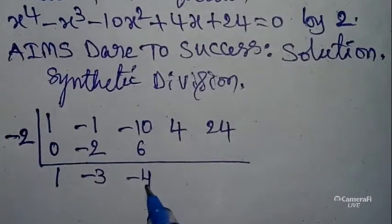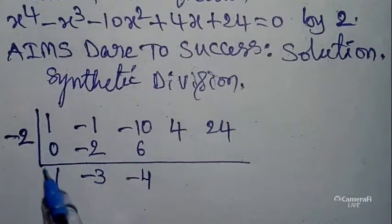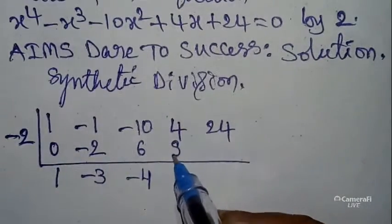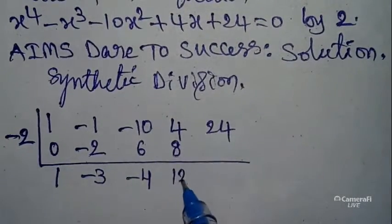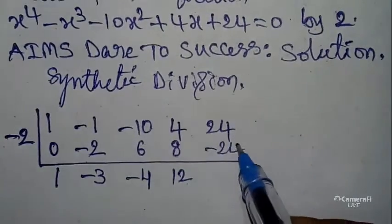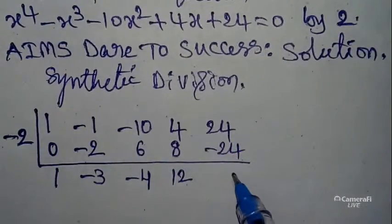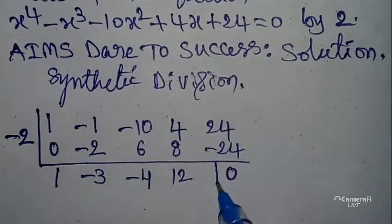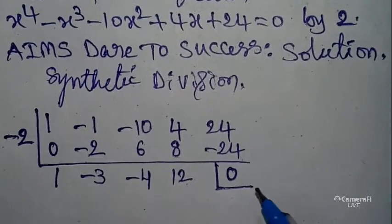6 - 10 is -4. Cross multiply: -4 × -2 is 8. 8 + 4 is 12. 12 × -2 is -24. Addition: 24 - 24 get cancelled, so we get 0.